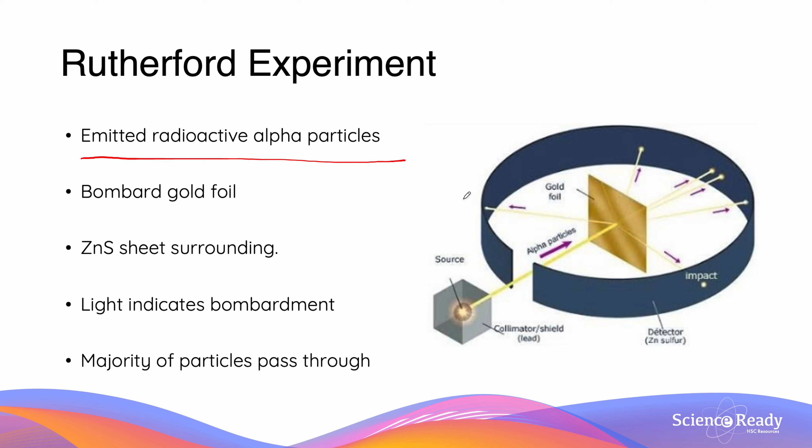So how could we tell where the alpha particles went? The gold foil was surrounded by a sheet of zinc sulfide, which we can see in the blue around here. They knew at the time a flash of light would be emitted when in contact with these alpha particles.